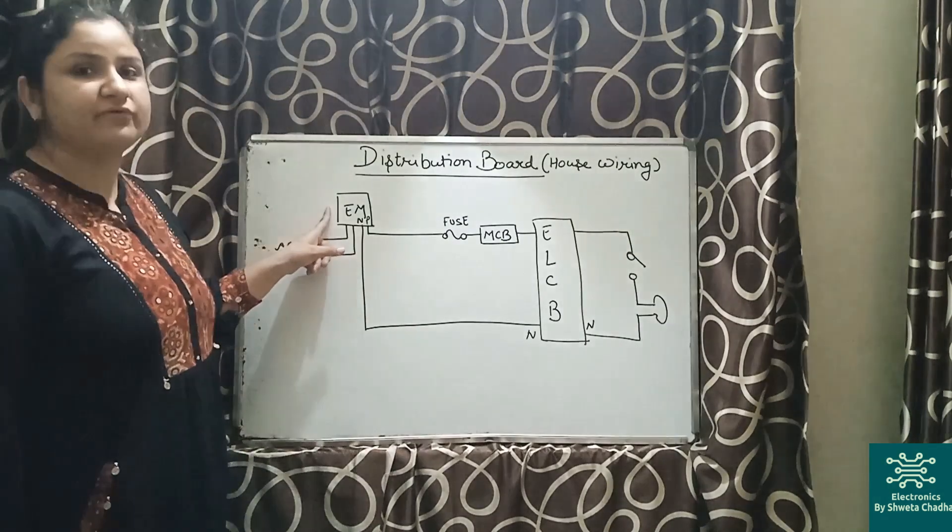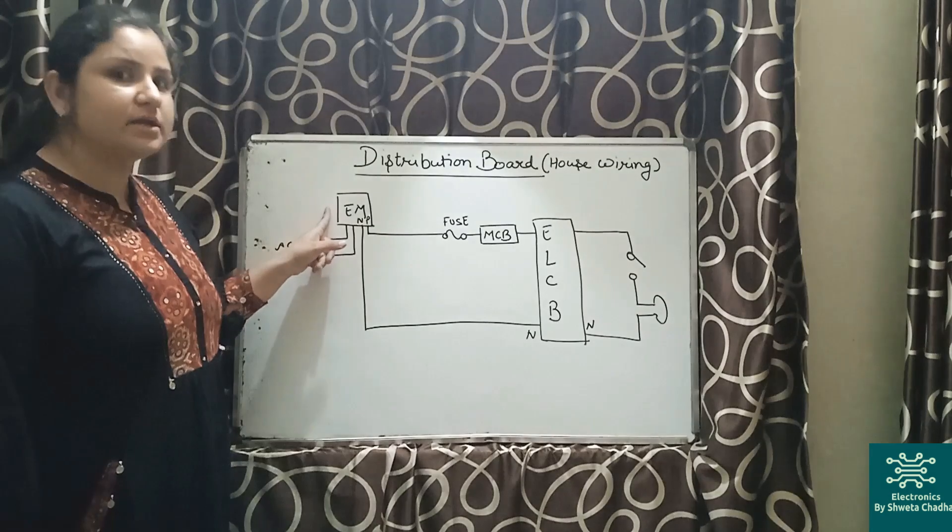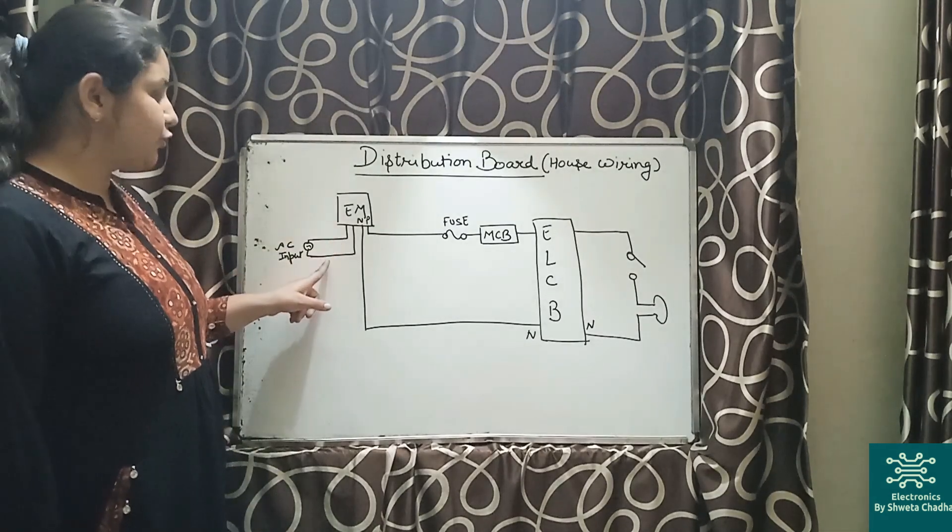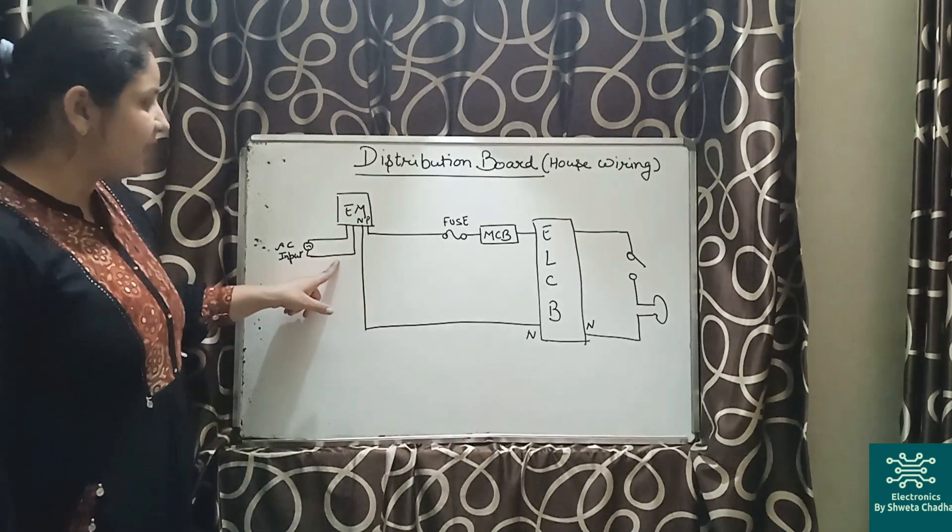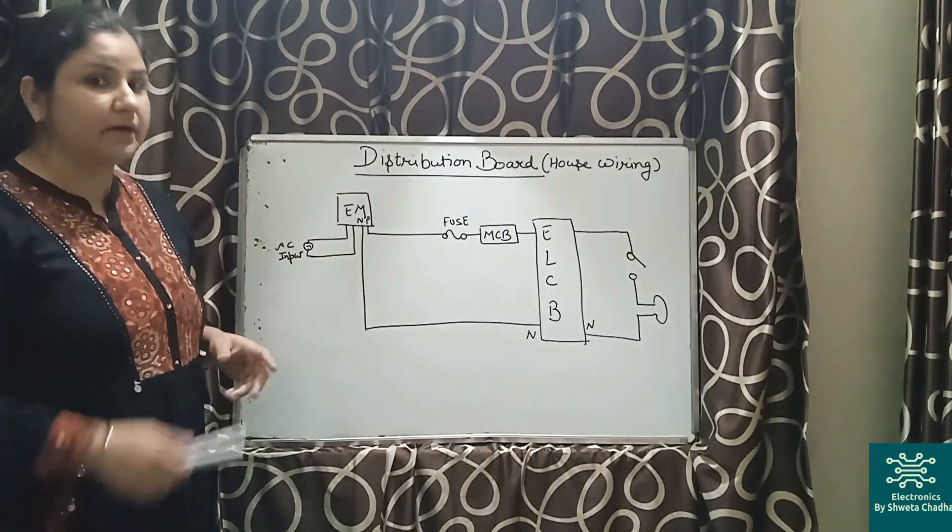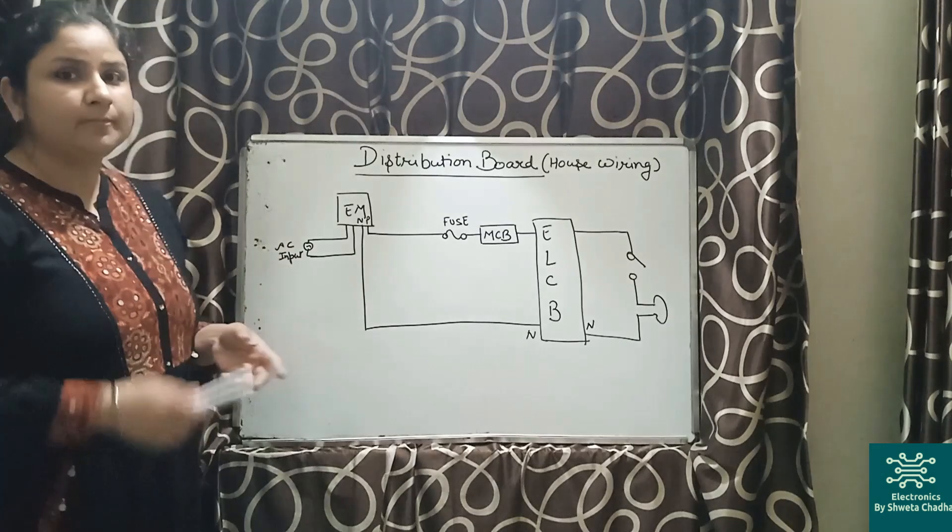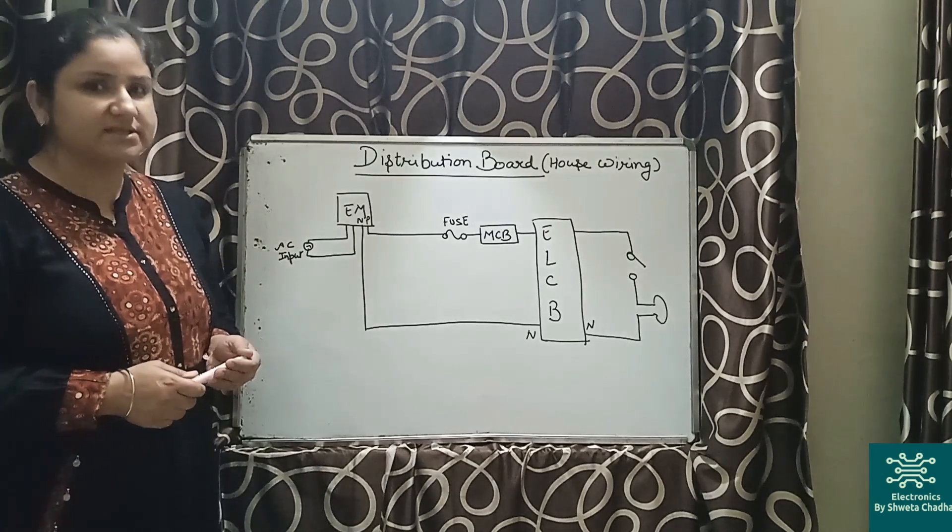First of all, we are going to have an energy meter. In the energy meter, we are supposed to get two input and two output. The input signals will be directly plugged into the AC input signal, 220 to 240 volts AC signal, whereas the remaining two wires will be used for the further connections.